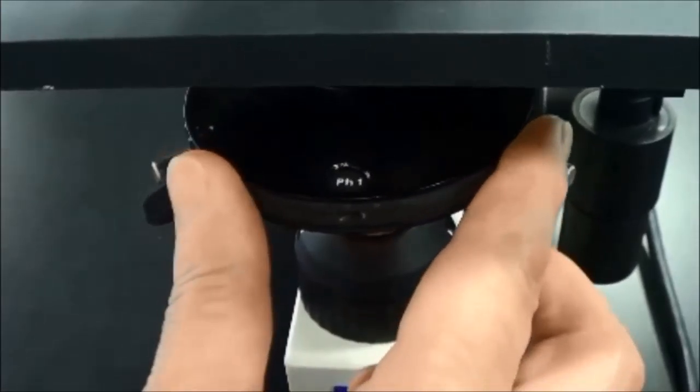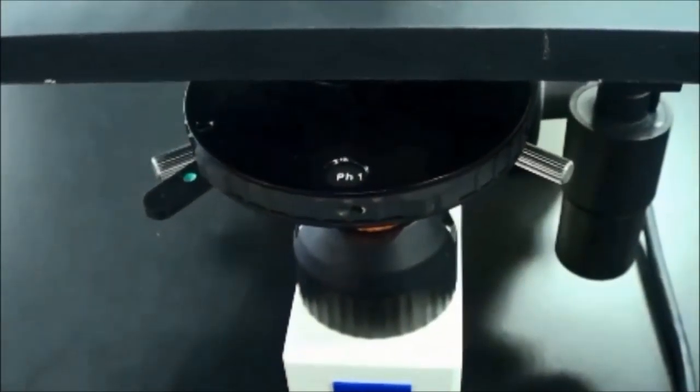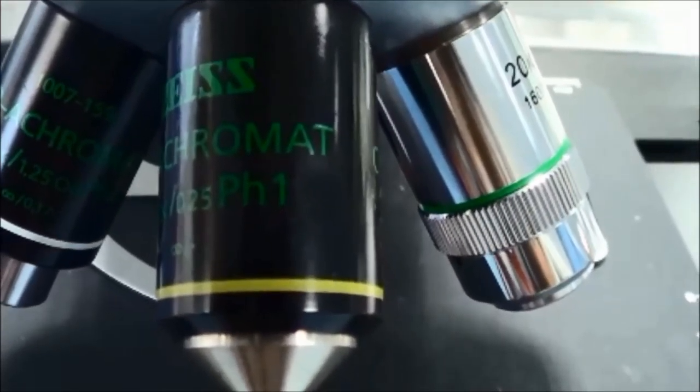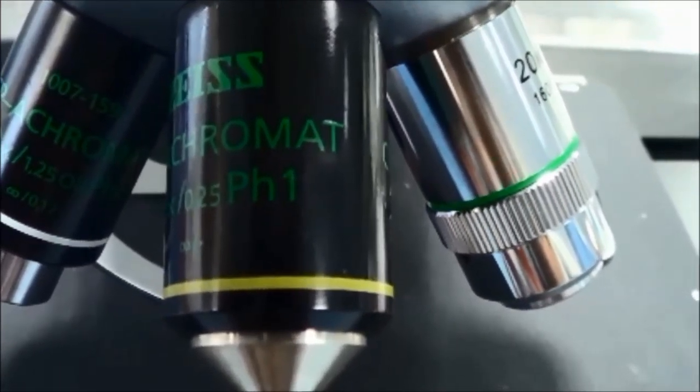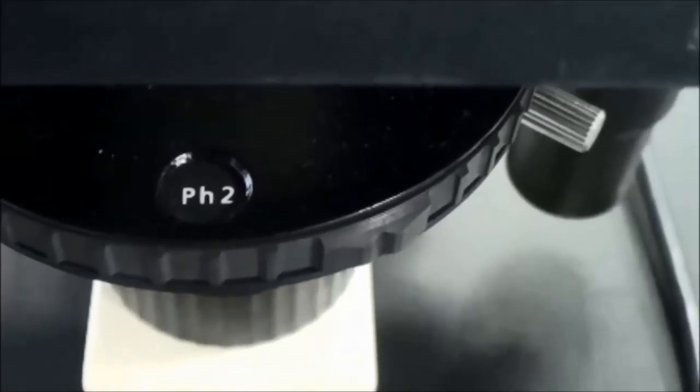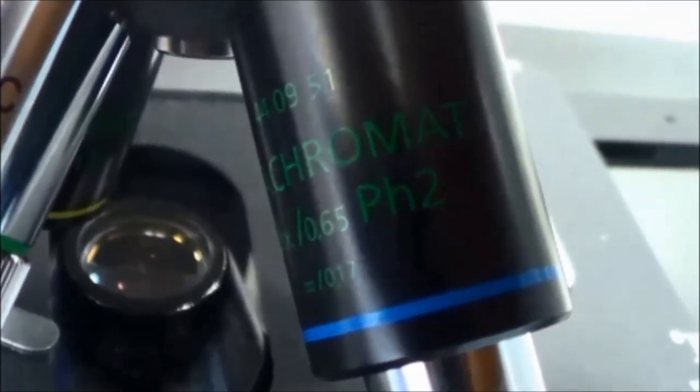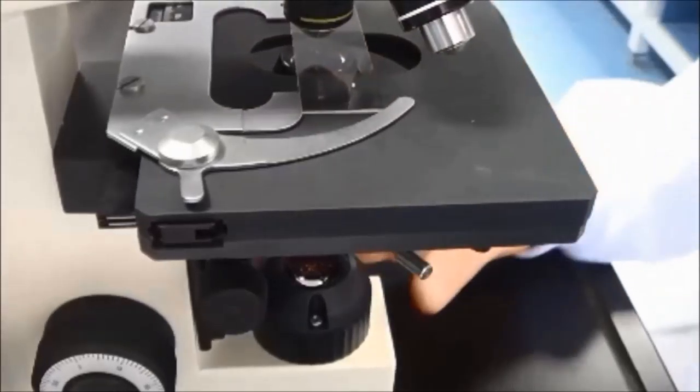Rotate the turret disc until PH1 is clicked into place. Set the relevant position on the turret disc of the condenser to match the phase contrast objective being used. For example, PH1 matches with the 10x objective. PH2 matches with the 40x and 100x objectives.